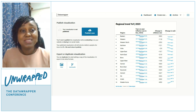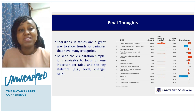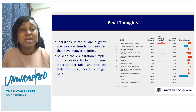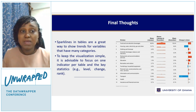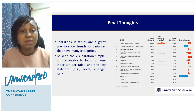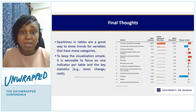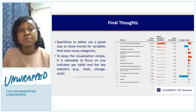That's how I create and customize the regional trends table. In conclusion, sparklines in tables are a great way to show trends for variables that have many categories — it doesn't even have to be regions. I've used this for a number of other variables. Here's a different table I've created — it's not at the regional level, but it again allows me to see trends over time.